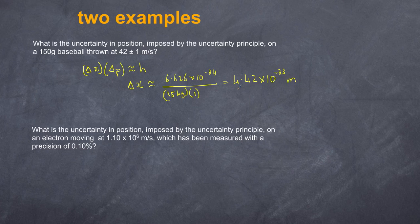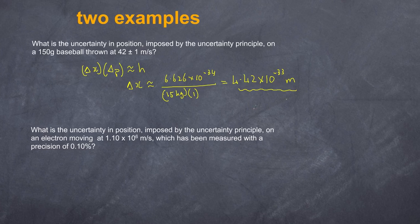What is the significance of that result? It's saying that the level of uncertainty of where the baseball is is on the order of 4.4 × 10⁻³³ meters. Clearly that is totally insignificant — which is why we don't observe the uncertainty principle in everyday life.